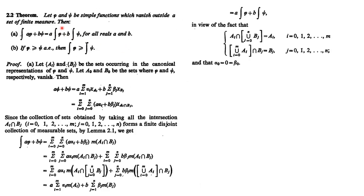The next theorem states: if φ and ψ are two simple functions that vanish outside a set of finite measure, then the integral of (aφ + bψ) equals a times the integral of φ plus b times the integral of ψ. Constants can be taken outside the integral. This is the same linearity property as in the Riemann integral.